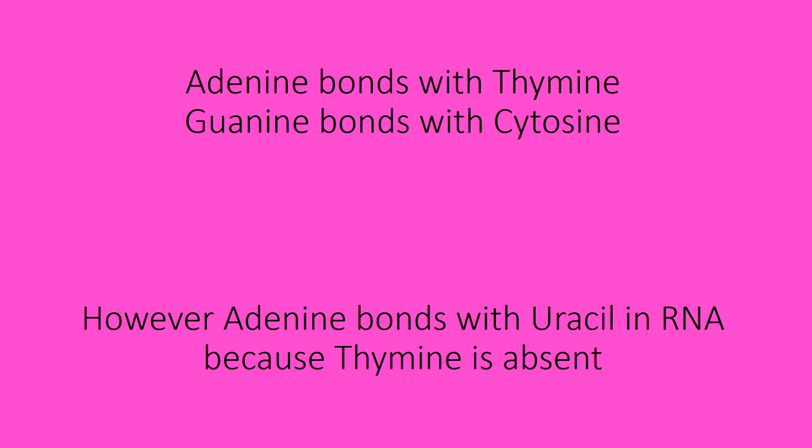So adenine binds with thymine, guanine binds with cytosine. However, in RNA, adenine binds with uracil because thymine is absent.